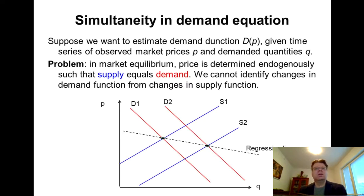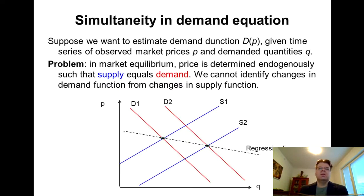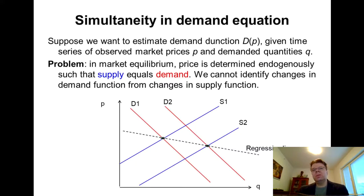In period one there is D1 and S1 at market equilibrium. Then for period two, there is a shift in both the demand curve and the supply curve — demand increases and supply also increases. The new equilibrium in period two is the point where S2 and D2 cross. So the market equilibrium changes from period one to period two: price decreases a little and quantity increases.